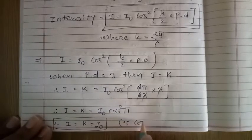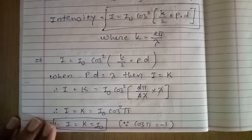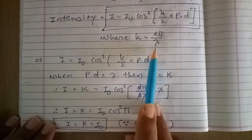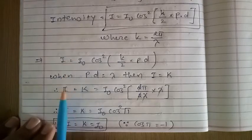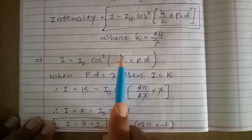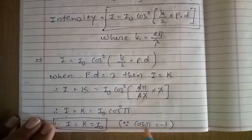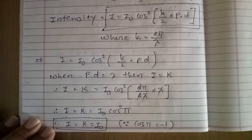Because cos pi is equal to minus 1. Again, remember the formula: I is equal to I₀ cos square (k/2 into PD). So when path difference is lambda, I equals K equals I₀ cos square pi. But cos pi is minus 1, so minus 1 whole square is plus 1. Therefore I equals K equals I₀.